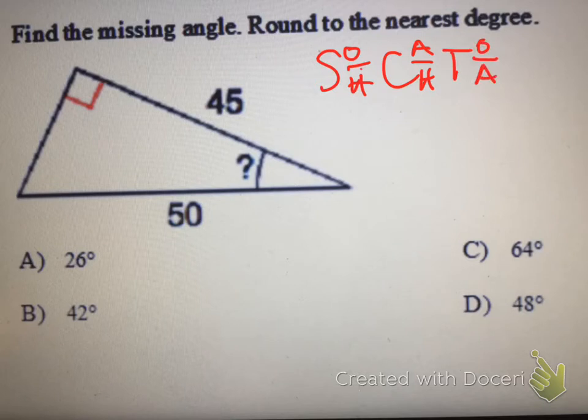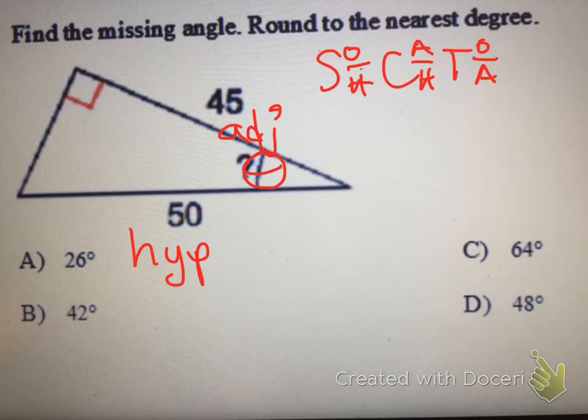And the sides of this triangle, if we're referring to this missing angle as theta, are going to be the hypotenuse and the adjacent side. Sometimes it's really hard to tell when the triangle's long and skinny like this which is the hypotenuse and which is the adjacent side. But if you look at this right angle symbol like an arrow, it always points to the hypotenuse.